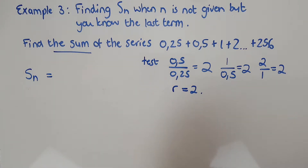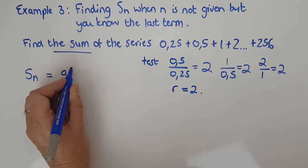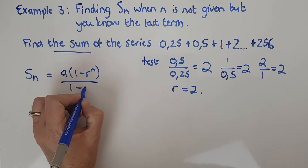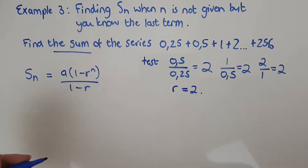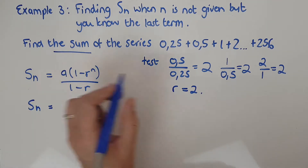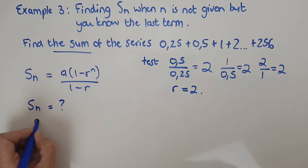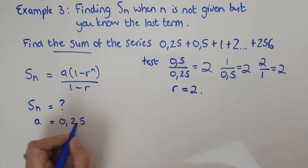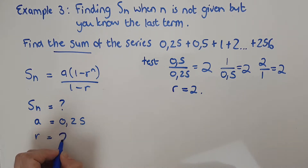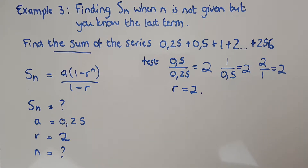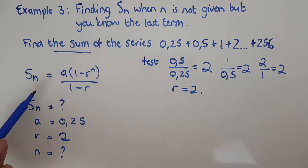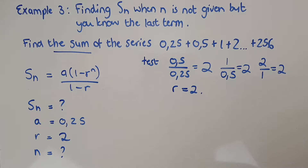I'll write down the Sn formula: Sn equals a times (1 minus r to the n) over (1 minus r). Now let me note what I have. Sn — I don't have that. a — I have 0.25. r — I have that, just worked it out. n — I don't have that. I can't get Sn without using the formula, so I need everything else, and the missing piece is n.